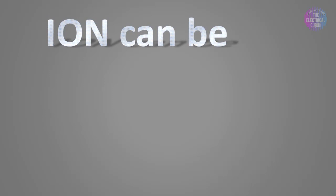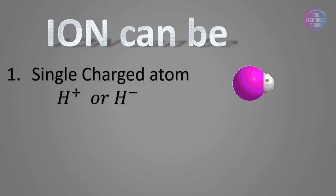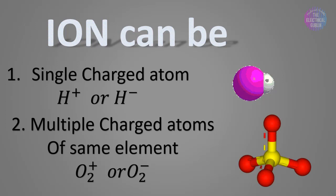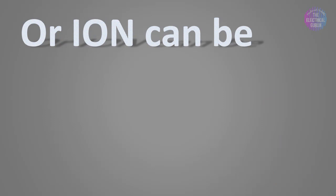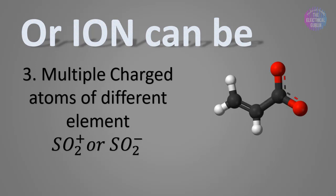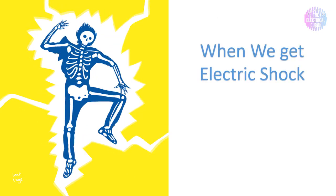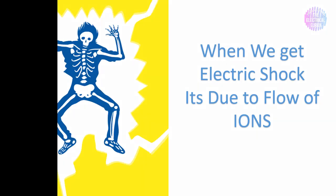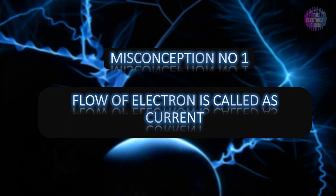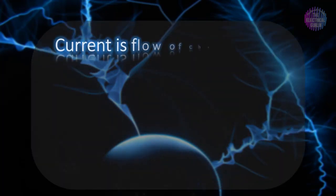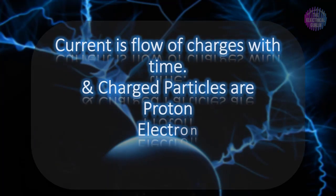Ions can be a single charged atom of hydrogen, or multiple charged atoms of the same element like two atoms of oxygen, or multiple charged atoms of different elements like sulfur and oxygen forming SO₂. The best example of ion production is electrolysis. In the process of electrolysis, the flow of ions produces current. As 70 percent of our body is made up of fluid containing electrolytic elements, when we get a shock, the current is produced due to the flow of ions. Hence the current flow in metal is due to electrons, but more appropriately, current is the flow of charges with time, and charged particles include protons, electrons, and ions. So here we have busted our first misconception.